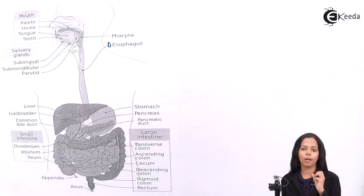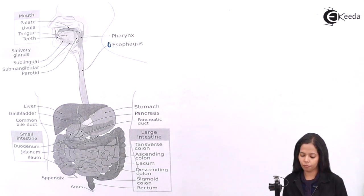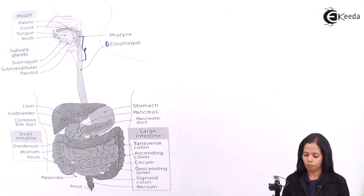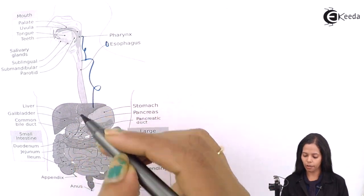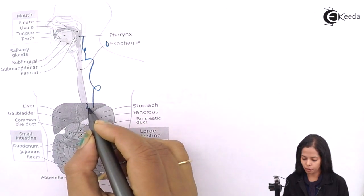By the name itself, you must have understood where these regions lie. So observe this diagram carefully. Till this region, it is called cervical. From here till here, it is called thoracic, and the last part from here till here is called the abdominal region.